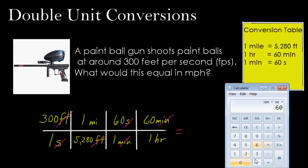60 times 60 equals, there's our product. I'm going to divide that by the denominator, which is 1 times 5,280 times 1 times 1. So I'm just going to put 5,280. And that gives me the answer of 204.5 miles per hour.